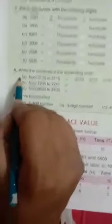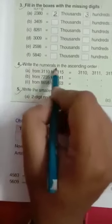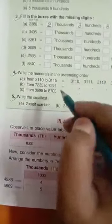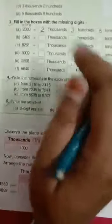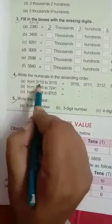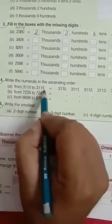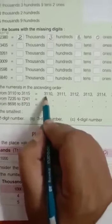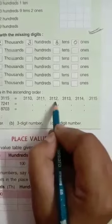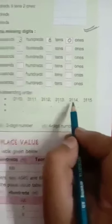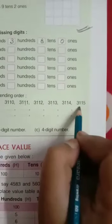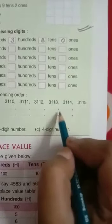Now question number four is, write the numerals in the ascending order. You have to, means you have to write the number in ascending order. Means smallest to greatest. Here written from 3,110 to 3,115. Means you have to, you start from here and end up to here. Now 3,110, 3,111, 3,112, 3,113, 3,114, 3,115. Like this, you do it with both the sums.